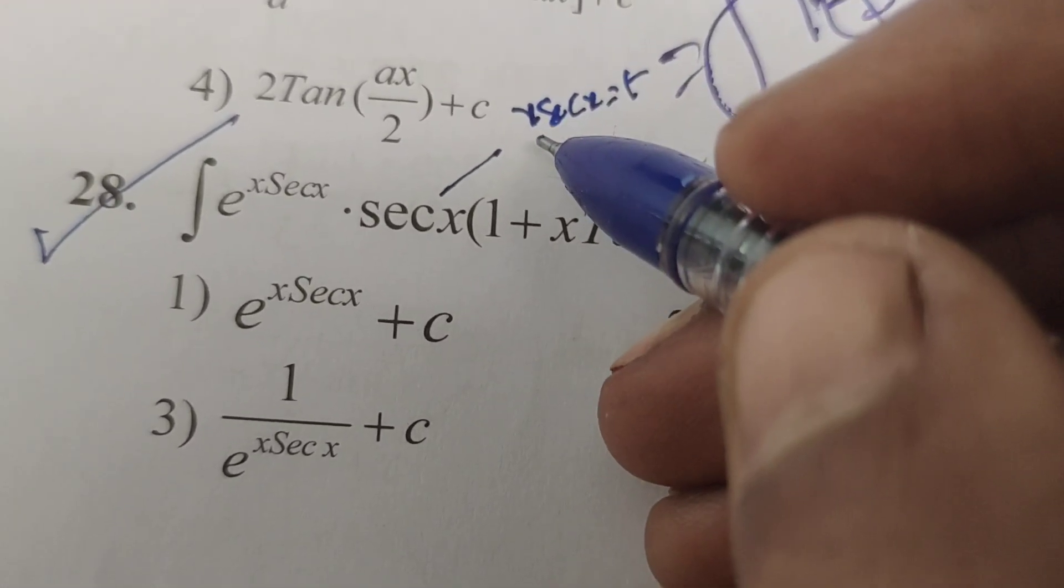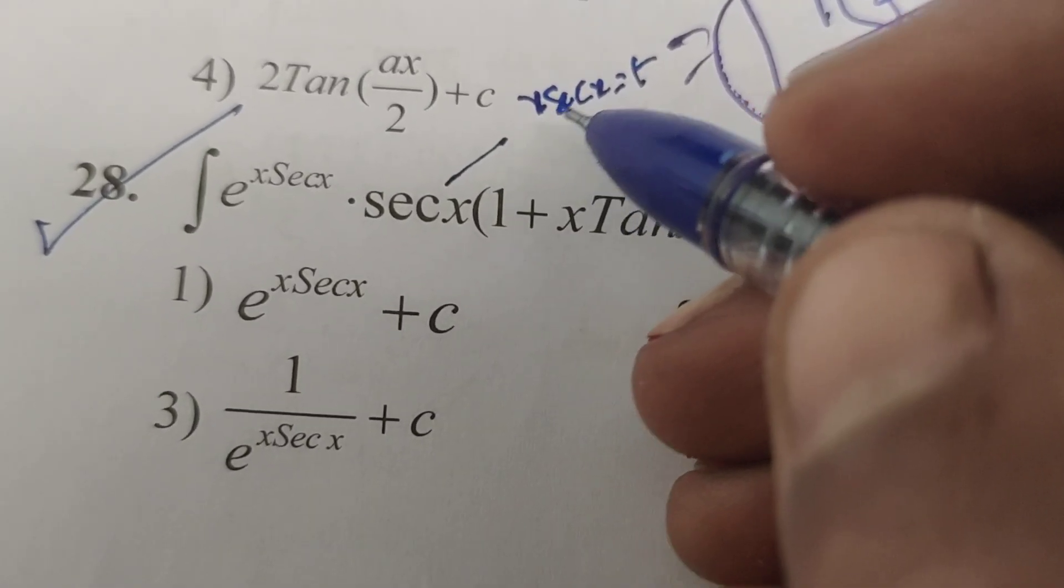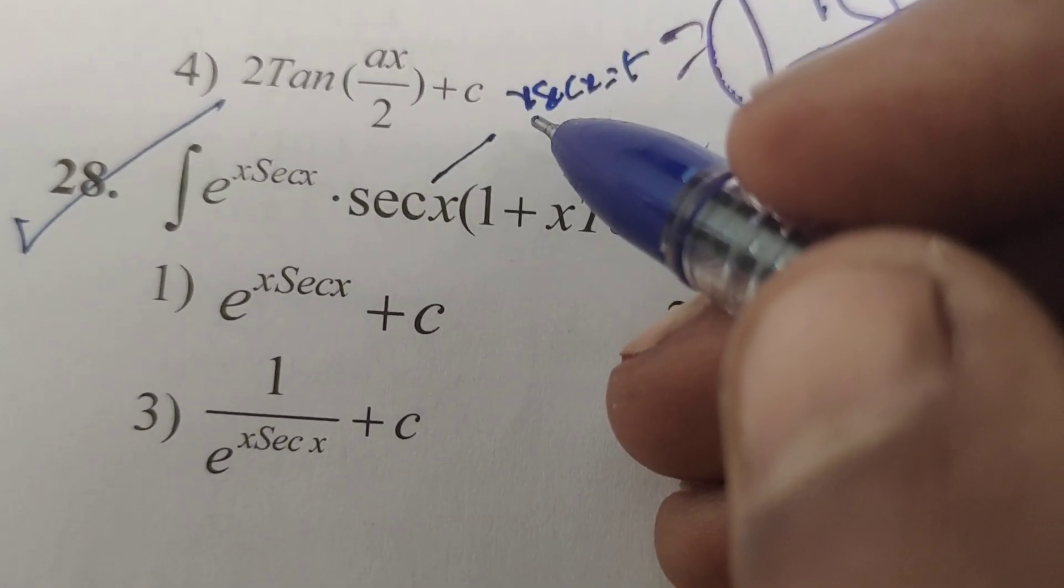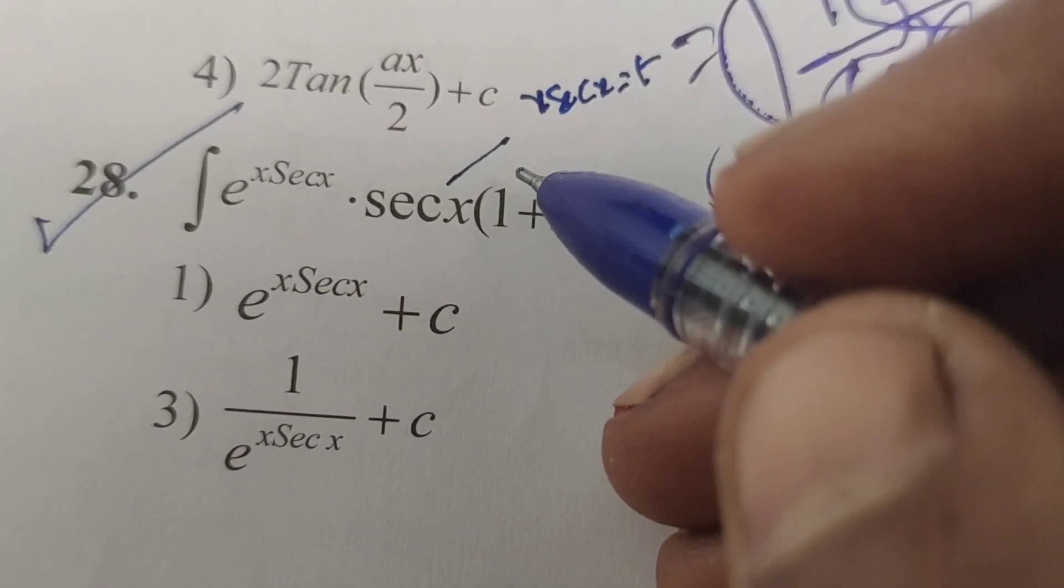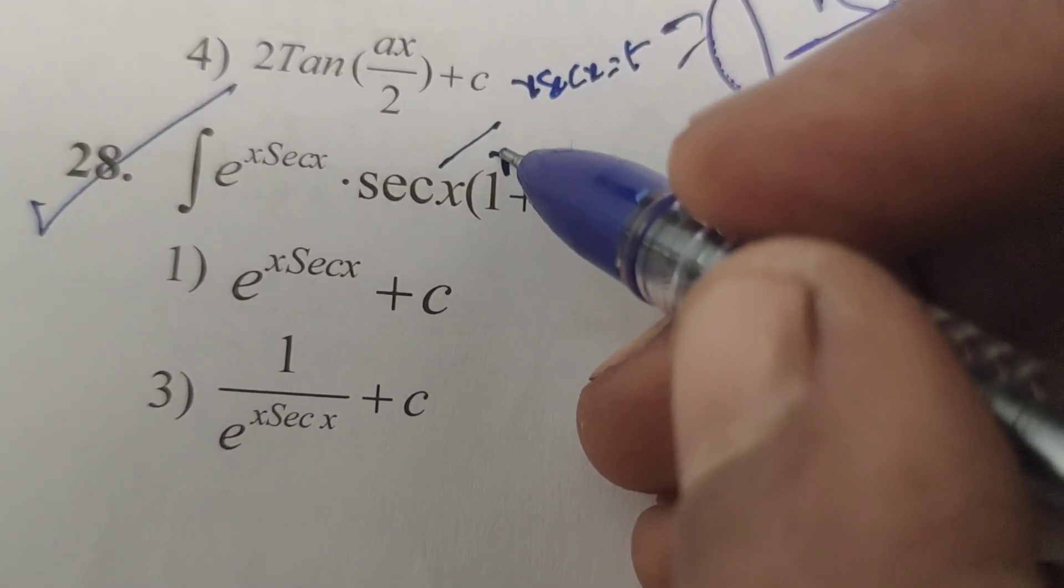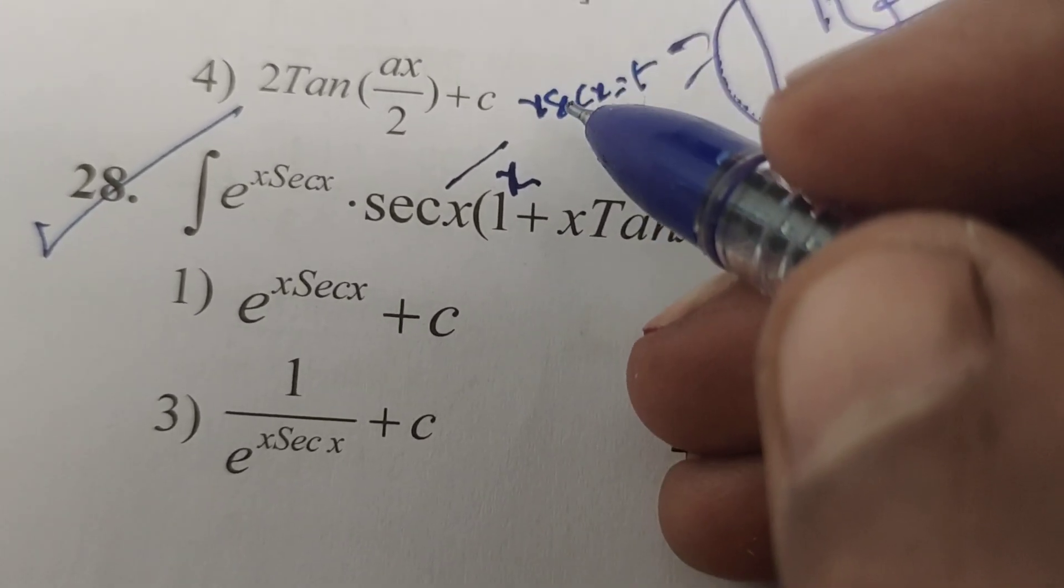Now differentiate this using uv formulae. Differentiation of uv means here u considered x, v means sec x. Differentiation of uv formulae: u into v dash, that is sec x whole dash.